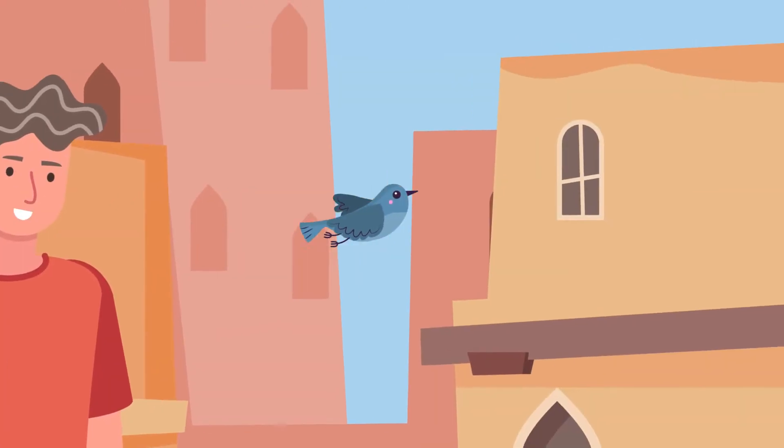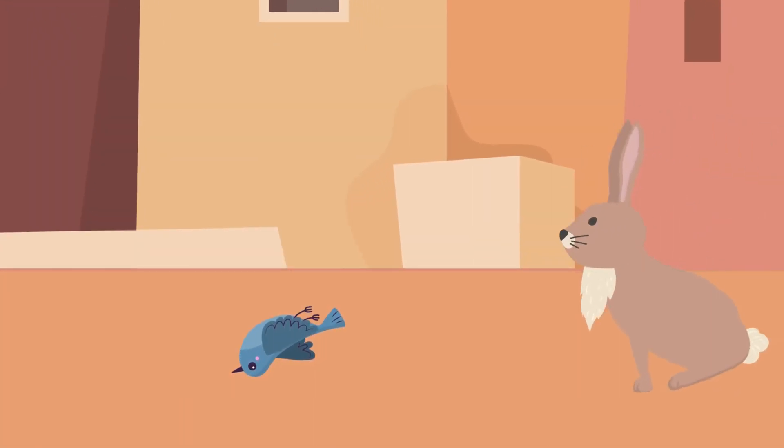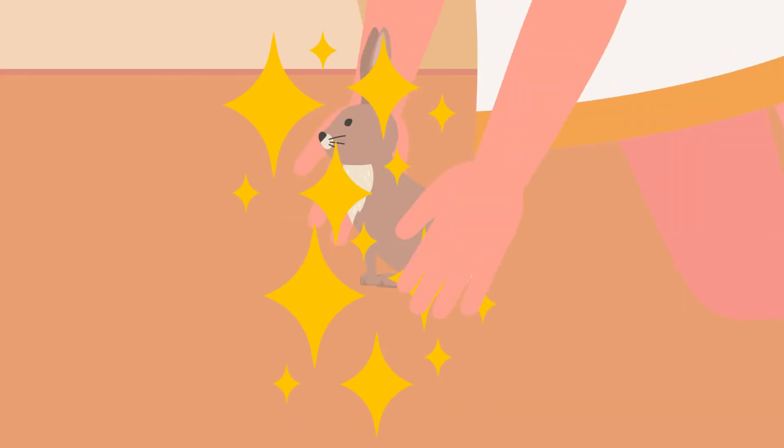According to mythology, the Easter bunny came to be because Ostara saved an injured bird. The frozen wings of the bird prompted Ostara to turn it into a rabbit instead. Hence, the association of rabbits to Easter came to be.